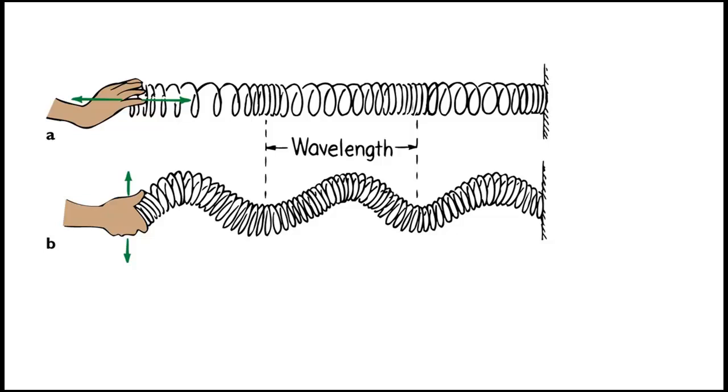The top diagram, diagram A, shows a longitudinal wave. And we know it's longitudinal because the direction of the disturbance, my hand in this case, is parallel to the motion of the wave itself.